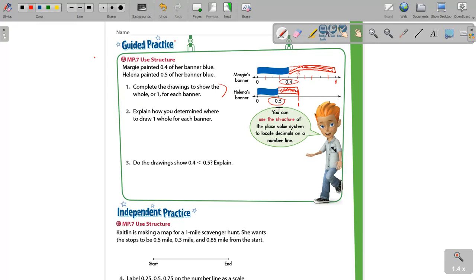Helena's banner is not the same size. It doesn't take up the entire thing. Her whole, the whole amount here, is just this size right here, whereas Margie's is the entire thing. They're two wholes. They're just different sizes.